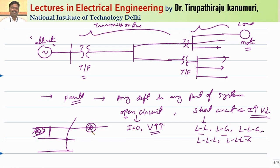Coming to alternators, transformers, or motors — their windings and conductors are protected by insulation. Over time, the insulation absorbs moisture, which causes it to lose its dielectric strength. Because of this, leakage current may start passing and sometimes breakdown may happen between two conductors. In transformers or alternators, these faults are called inter-turn faults or inter-phase faults, depending on whether they occur between two adjacent turns or two adjacent phases.